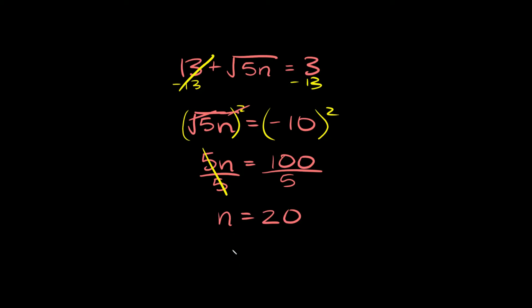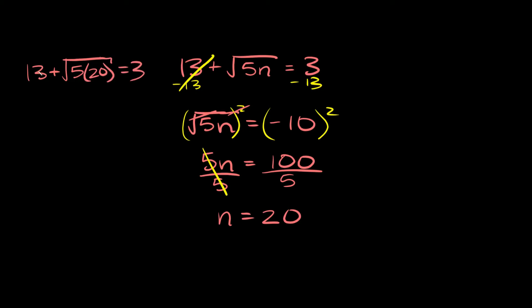Now it's really important to always check your solutions because sometimes your solution doesn't actually work in the equation. So here we're going to plug in 20 for n — and hint, it's not going to work. So we're going to have 13 plus the square root of 5 times 20 is equal to 3.